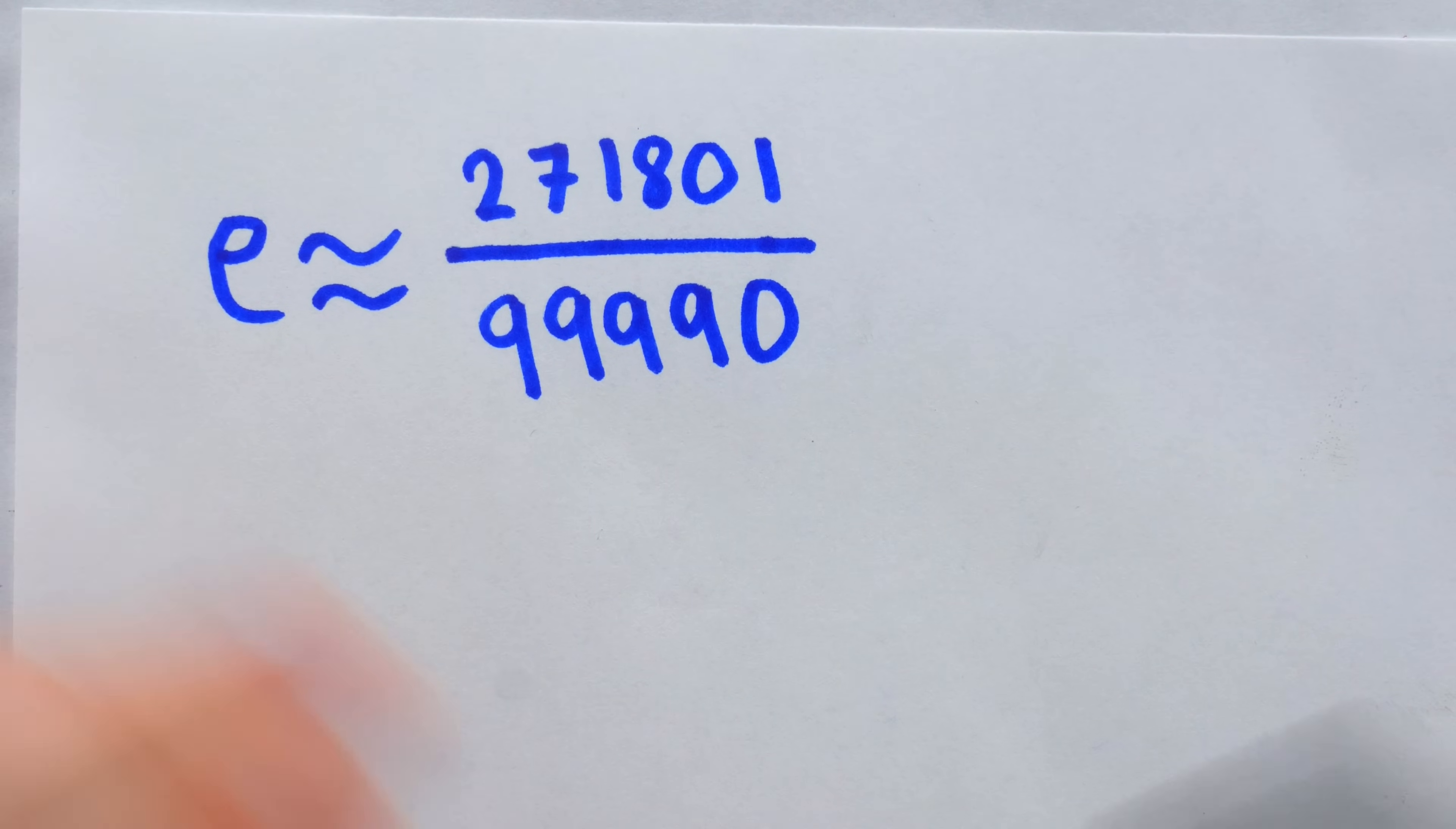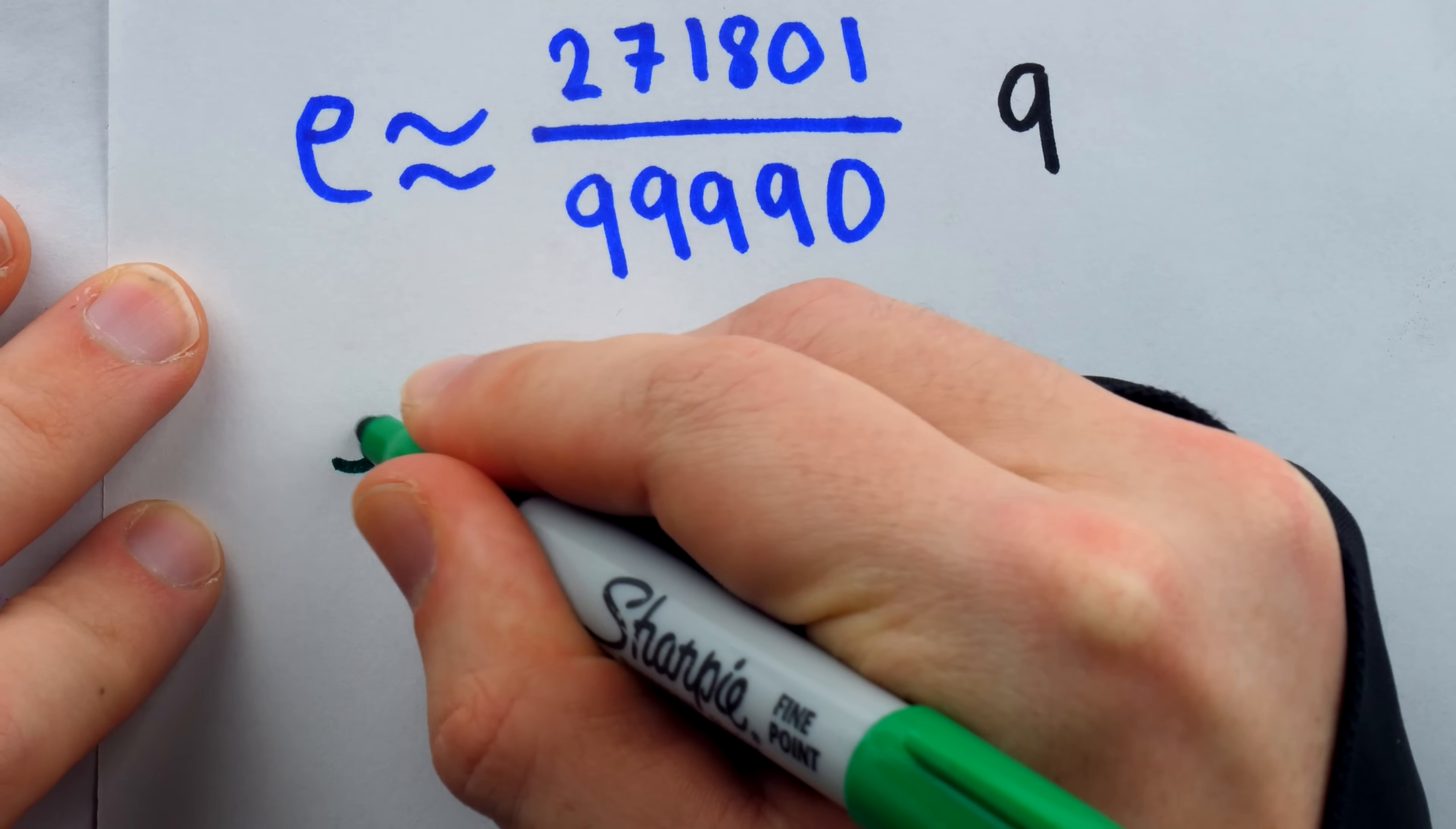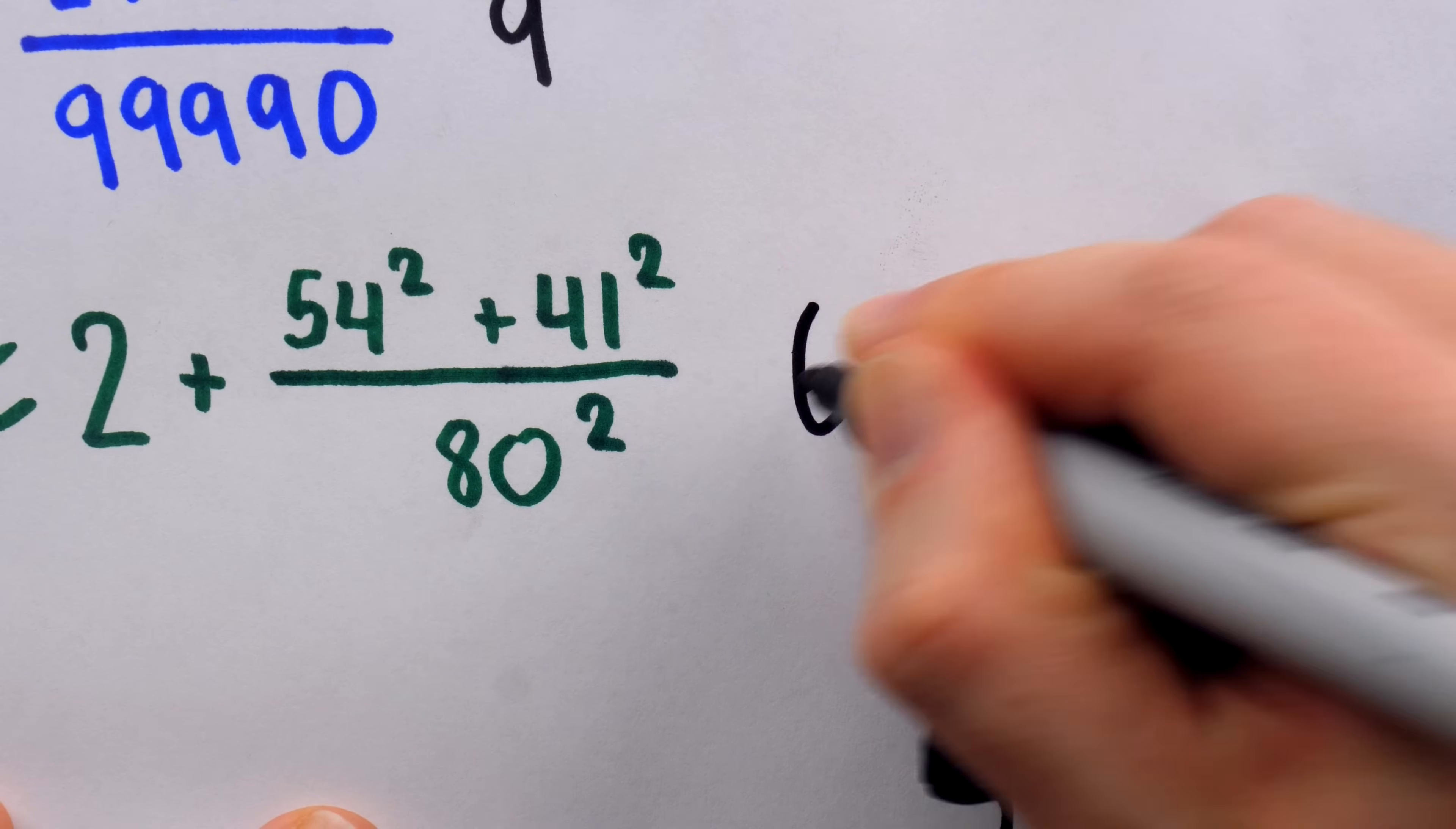This fraction is a pretty good approximation of e. In fact, it's correct to 9 decimal places. That means it's accurate all the way up to right there. Another cute approximation of e looks like this. This approximation for e is accurate to 6 decimal places.